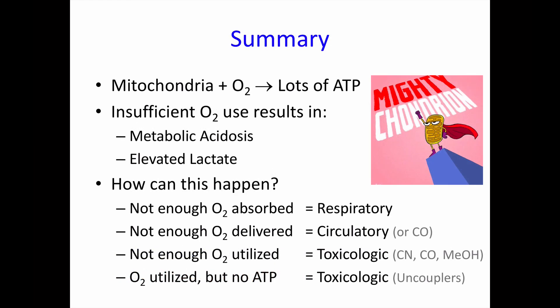Here's the summary slide. The mitochondrion is the powerhouse of the cell — it needs oxygen to produce a lot of ATP. If you don't have enough oxygen, you develop a metabolic acidosis with an elevated lactate, and this can happen in multiple ways. You might not have enough oxygen absorbed — a respiratory problem. Not enough oxygen delivered is a circulatory problem, but carbon monoxide can also be responsible. Not enough oxygen utilized is a toxicologic problem, occurring from cyanide, carbon monoxide, or from the formate ion metabolite of methanol, among others. Or you can have oxygen being utilized but still not making ATP efficiently — and that's from uncouplers of oxidative phosphorylation.